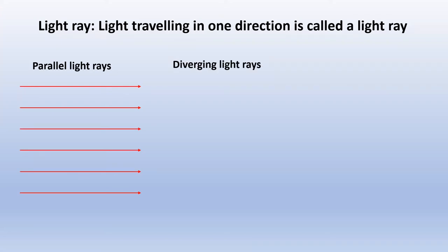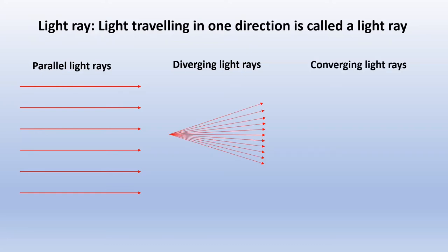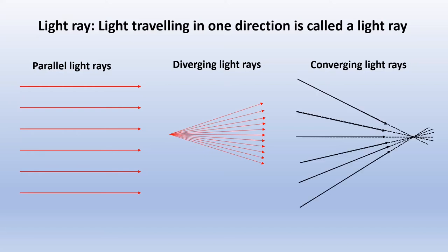If the light rays are starting from a point, we call them diverging light rays. If the light rays are going to meet at a point, we call them converging light rays. Now let us look at the laws of reflection of light.